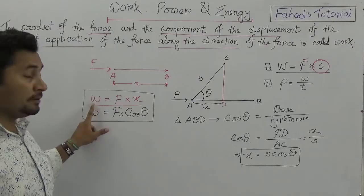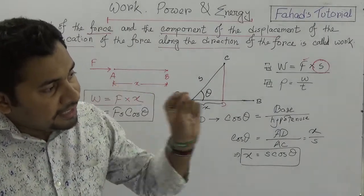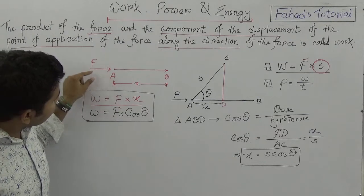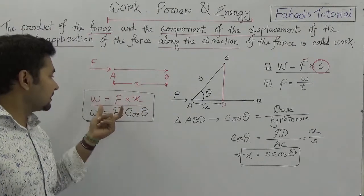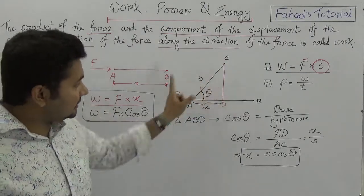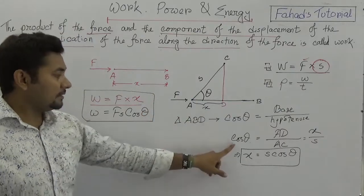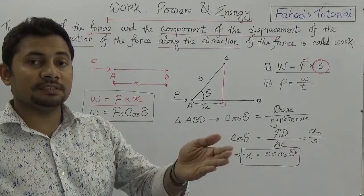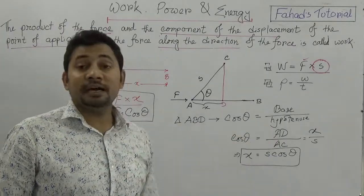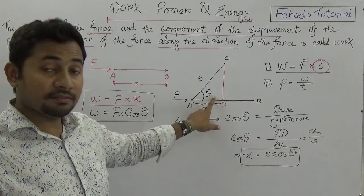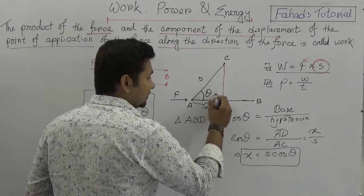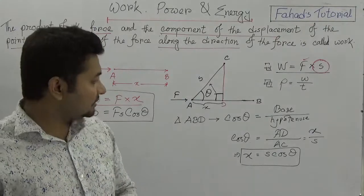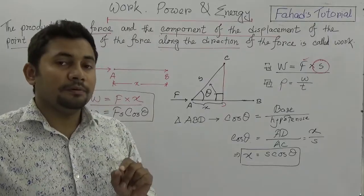So now we have two equations. Number one: W equals F times X, when the point of application of force is followed by the displacement — the linear case where it follows the direction and traverses X amount of distance. Number two: if it creates an angle theta to the side, then it will be W equals F times S times cos theta, because cos theta in a right angle triangle equals base divided by hypotenuse.